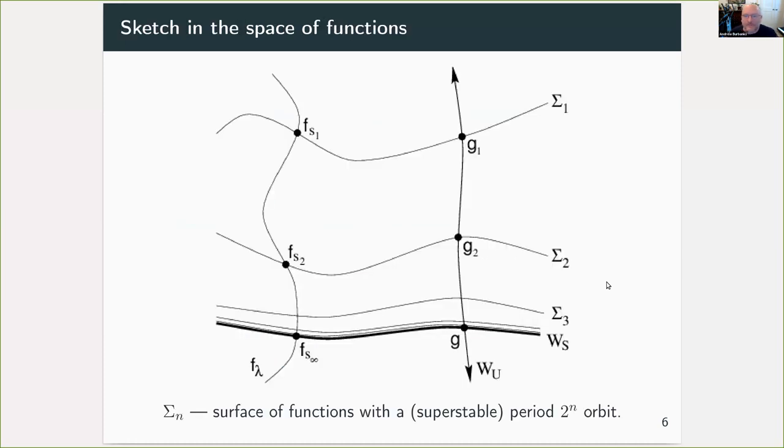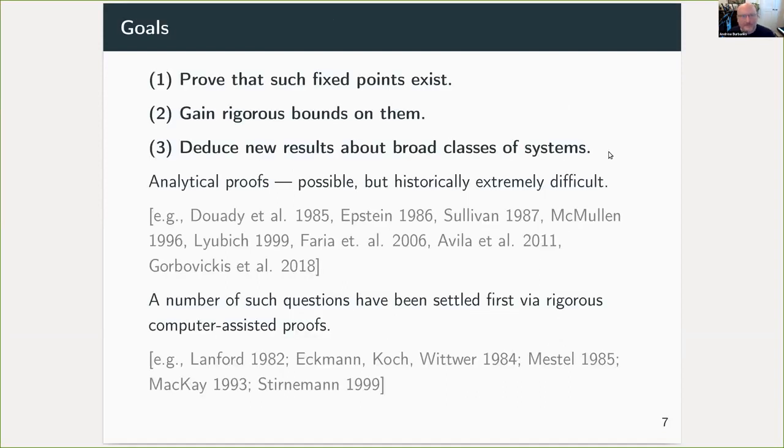It's easier perhaps to draw a picture. In the space of functions, here is a quick sketch. Roughly speaking, the idea is that we have a fixed point g here. It's got a one dimensional unstable manifold, and this universal constant delta turns out to be the corresponding expanding eigenvalue, and co-dimension one essentially stable manifold. So the goals in the sort of work that we do is to prove that such fixed points exist of renormalization operators, get rigorous bounds on them, and use these bounds to go off and deduce new results about broad classes of systems.